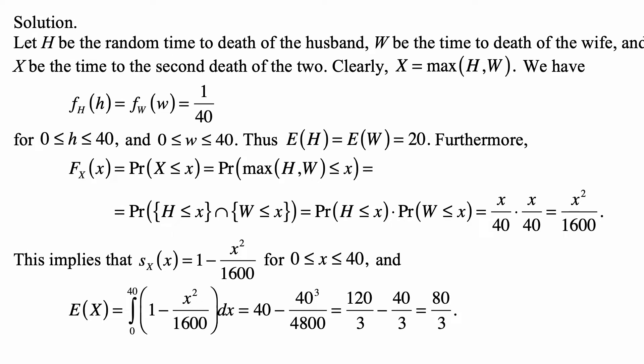And here's the solution. Let us write H for the random time to death of the husband, and W the time to death of the wife, till death, and X the time to the second death of the two. Clearly, X is equal to maximum of H and W.